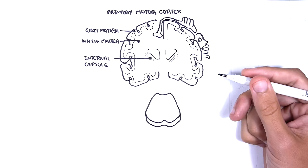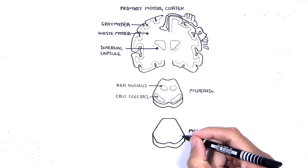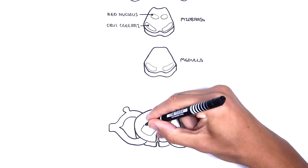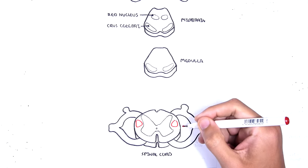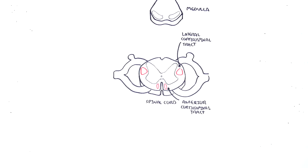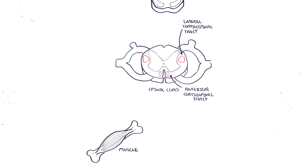Here is the brainstem, which is made up of three parts: the midbrain — important areas here are the red nucleus and the crus cerebrae — the pons, and the medulla oblongata. Here is a cross-section of the spinal cord, where the communication between upper and lower motor neurons occurs. The spinal cord has tracts, which are where neurons travel through. Important tracts in the pyramidal system are the lateral corticospinal tract and the anterior corticospinal tracts. The target organ of the motor neurons are the skeletal muscle cells.